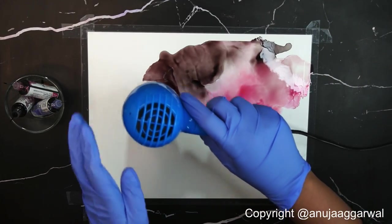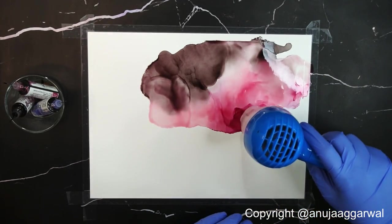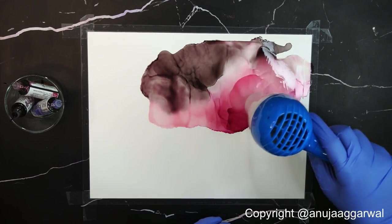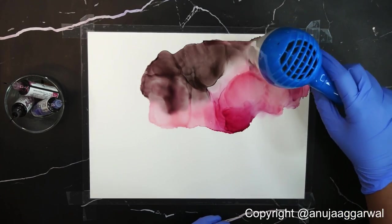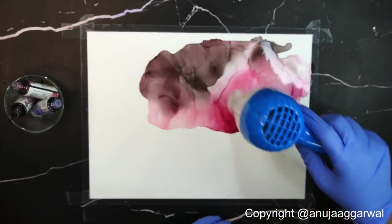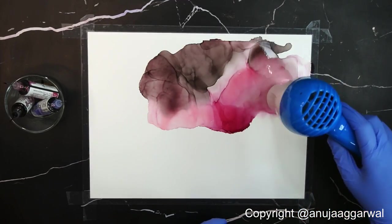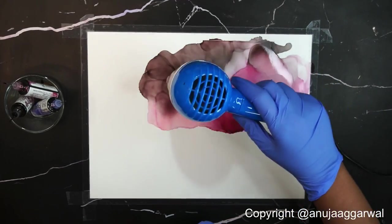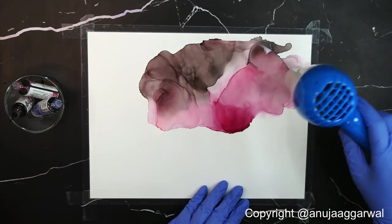I'm taking my dryer on top of the inks and I am just drying them. In the other video you will see that I dry only from the sides, but in this one I am drying from the top and that creates some amazing lines and uneven effects that look really cool.